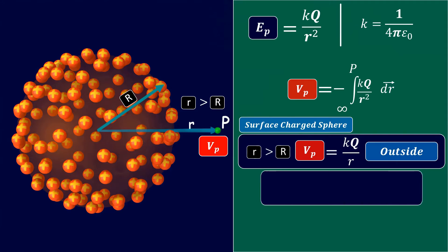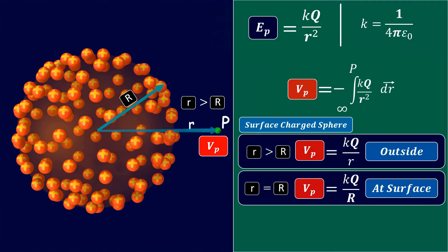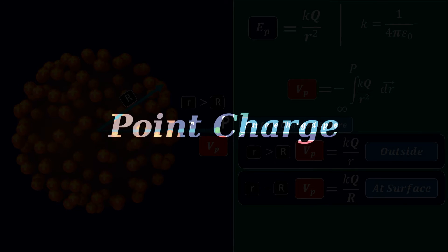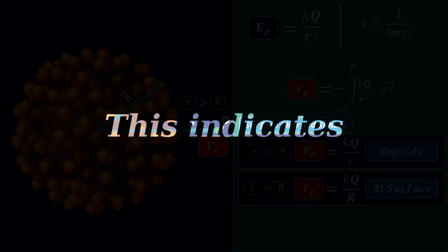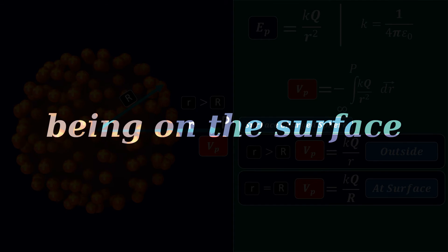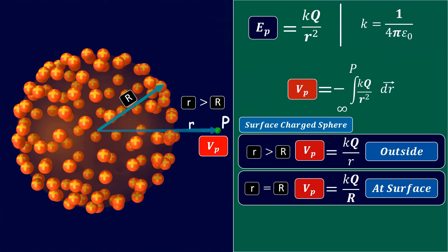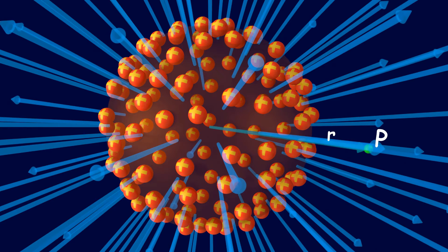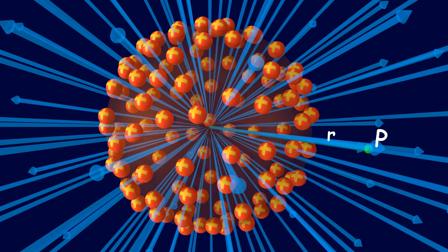The potential on the surface simplifies to kq/R, where R is the radius of the sphere. The formula for electric potential of a sphere and that of a point charge at any point P outside is the same. This indicates that despite the charges being on the surface, we consider the distance r from the center rather than from the surface. The electric field is radially outward from the surface, giving the impression of electric field lines emerging from the center as if a positive charge is placed at the center. This holds true for all types of charged spheres, as we will continue to consider the distance from the center.